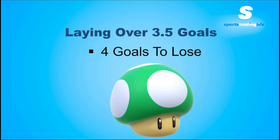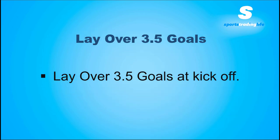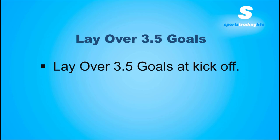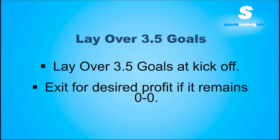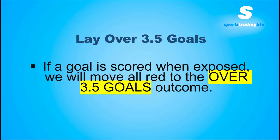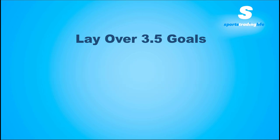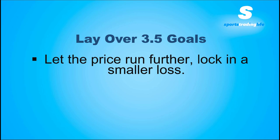Or, in the case of what we're going to show you today, get out for no loss at all. The idea is: you're going to lay over 3.5 goals at kickoff and then exit for your desired profit if it remains nil-nil — 5%, 10%, 20%, 25%, that part is up to you. You lay at kickoff, exit for your desired profit while it is nil-nil. Obviously if a goal goes in, you're going to be in a sticky situation. So if a goal is scored when we're exposed, we're going to move all the red to the over 3.5 goals outcome — move all the red to the overs side and leave zero on the unders.